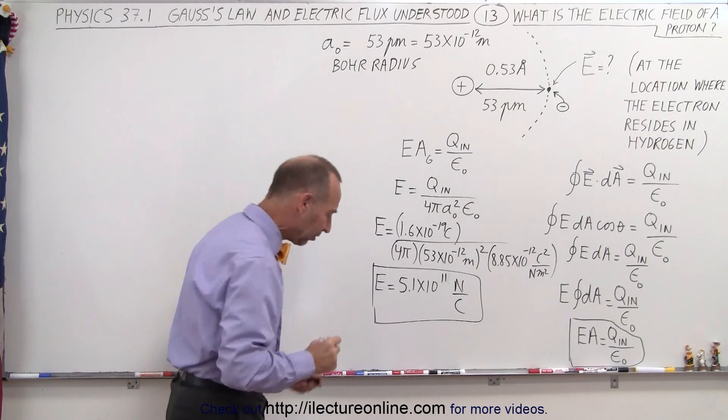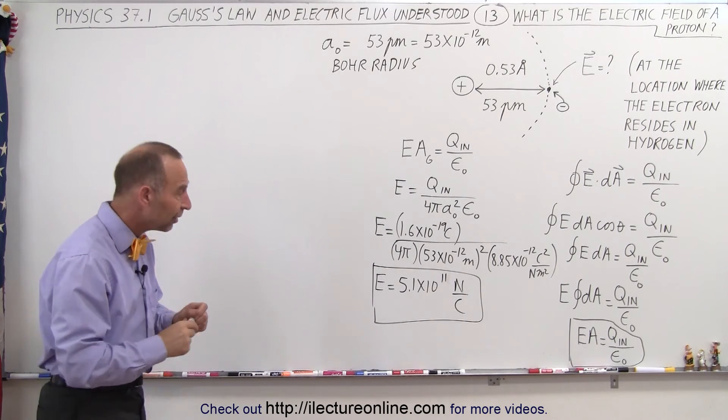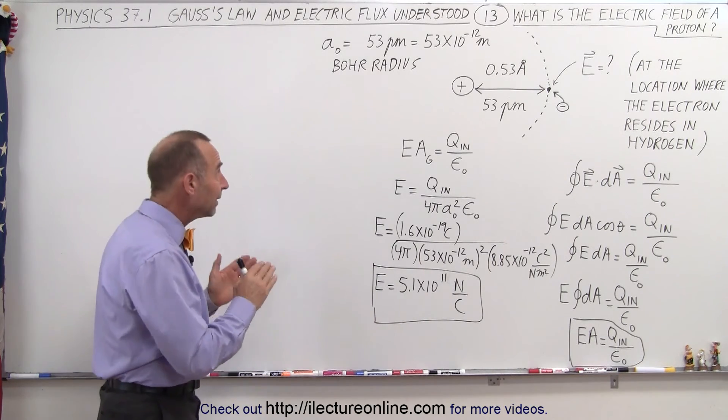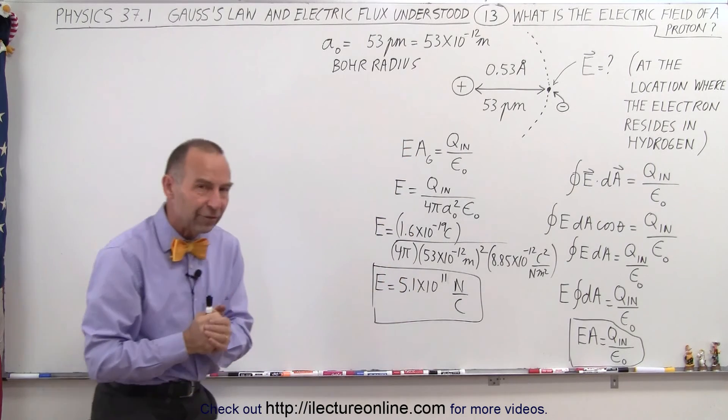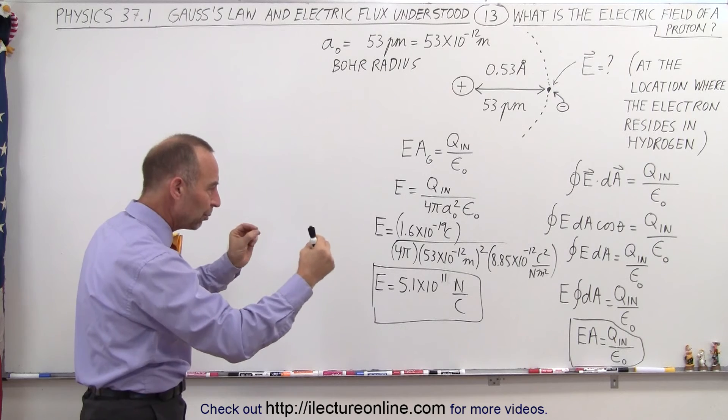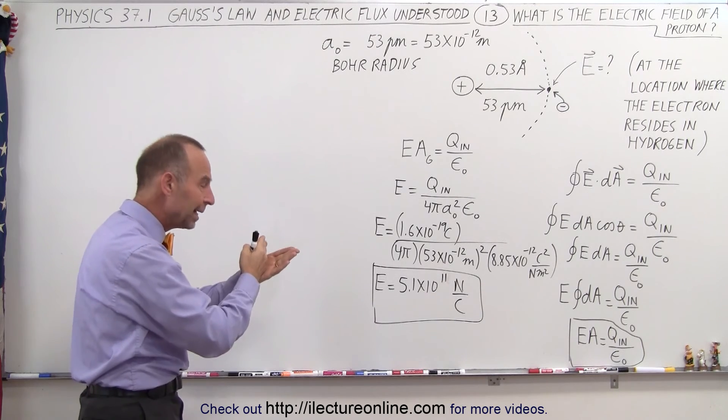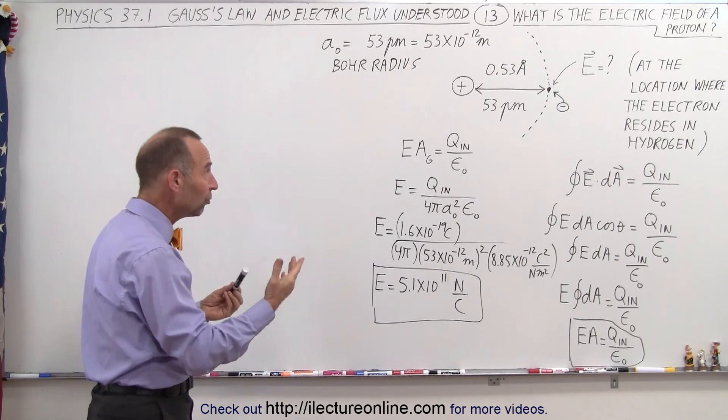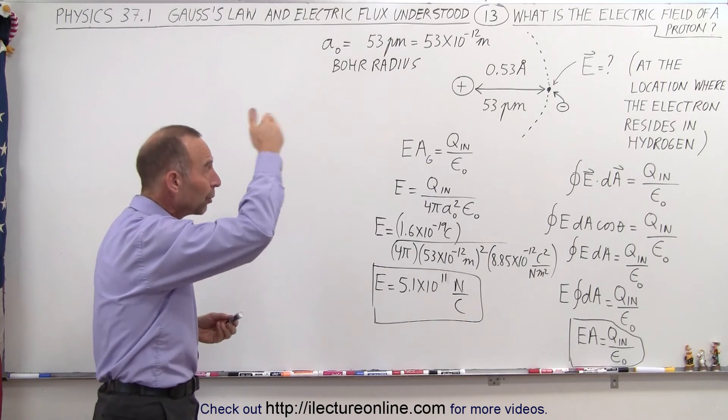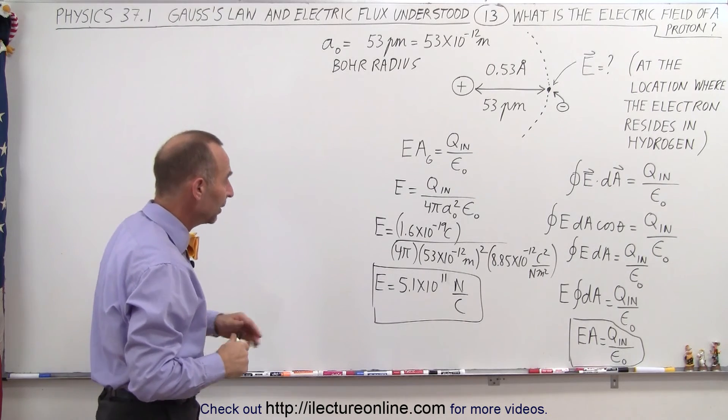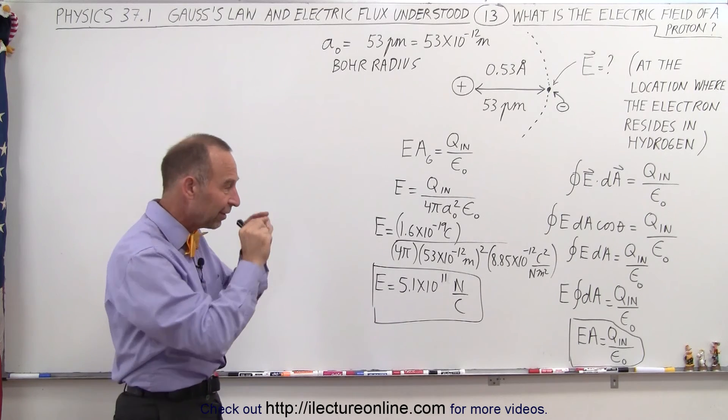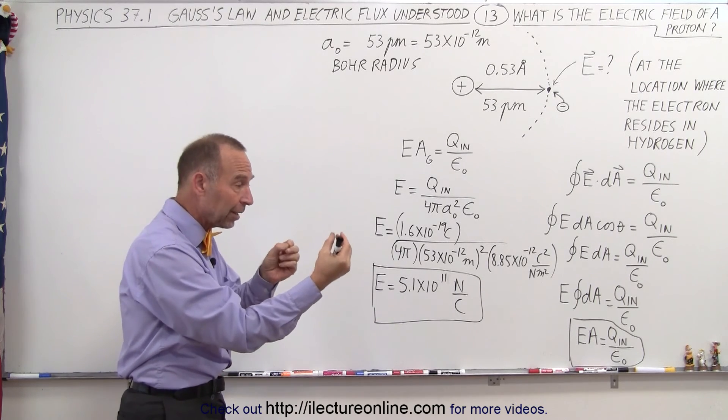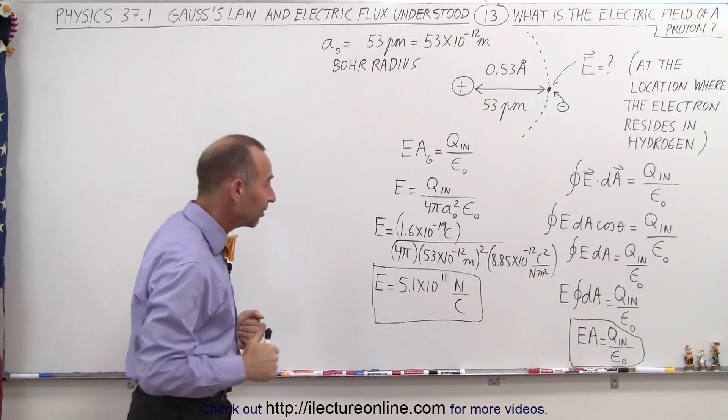So that is actually an incredibly powerful electric field. At the distance of where the electron resides, we have an absolutely enormous electric field. Therefore, we have this enormous attraction between an electron and a proton, which forces the electron to move around the proton at very high speeds. Now we have this concept of how strong the electric field is inside a tiny atom, which keeps the proton and the electron in very close proximity.